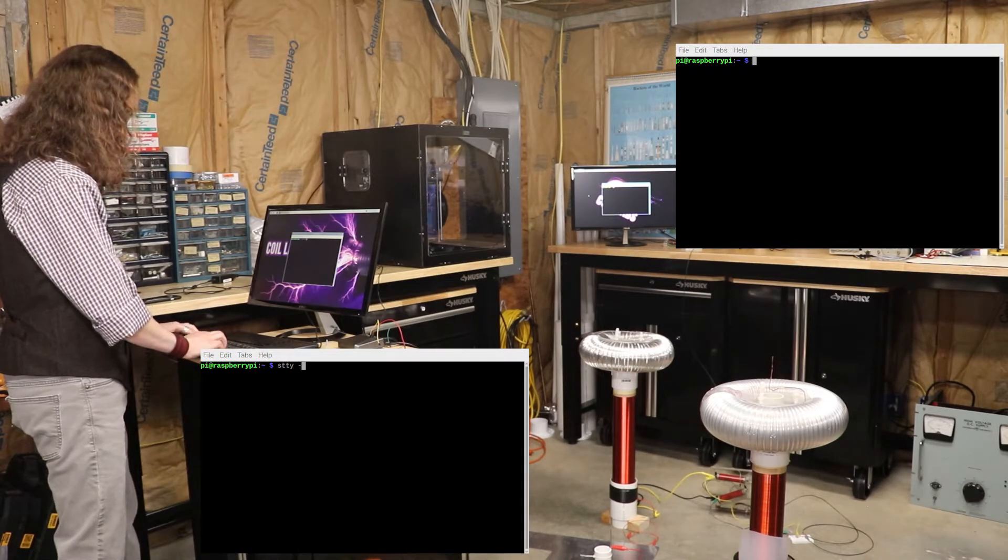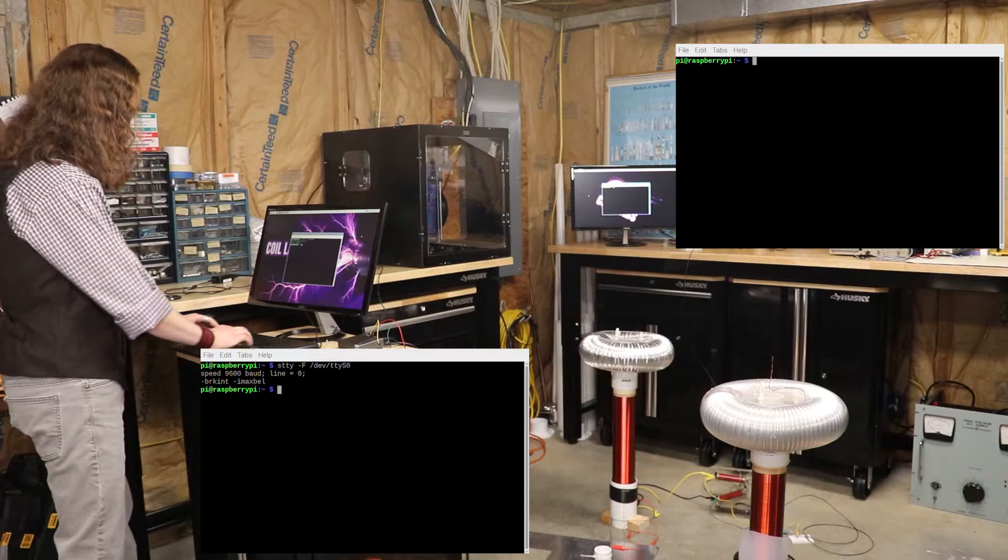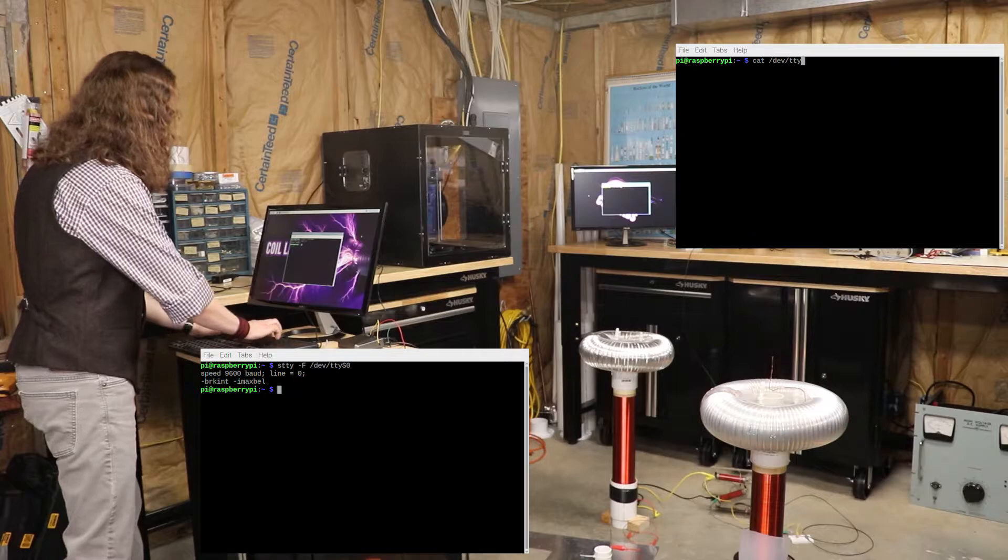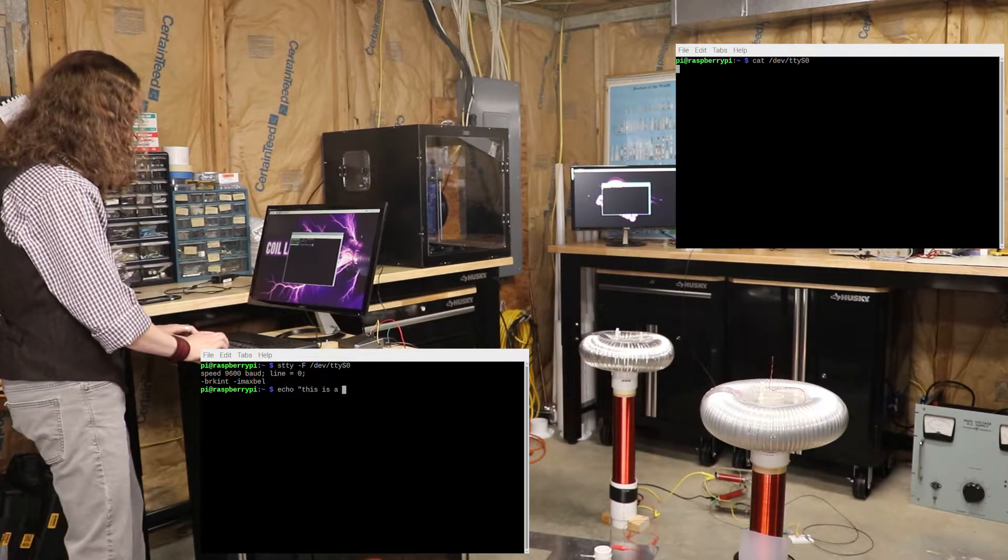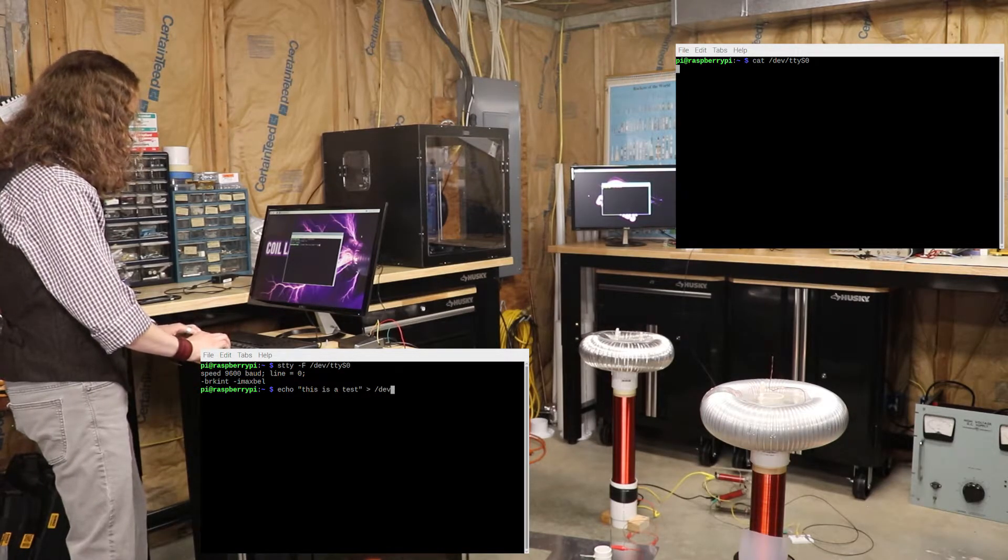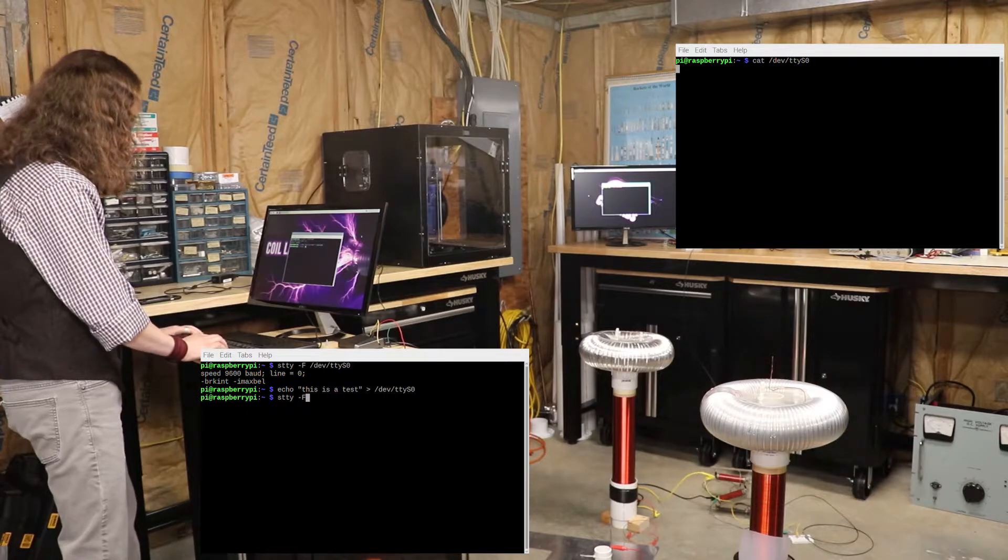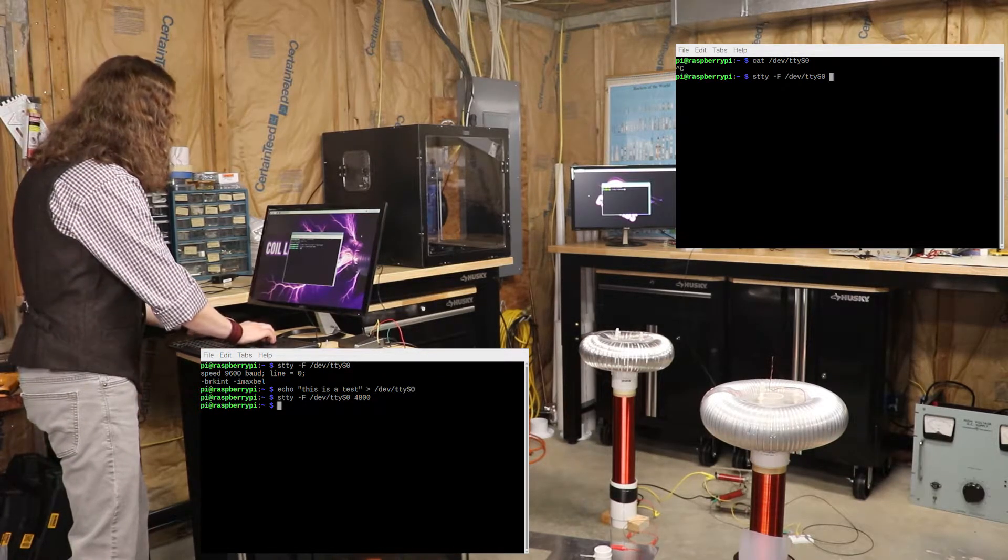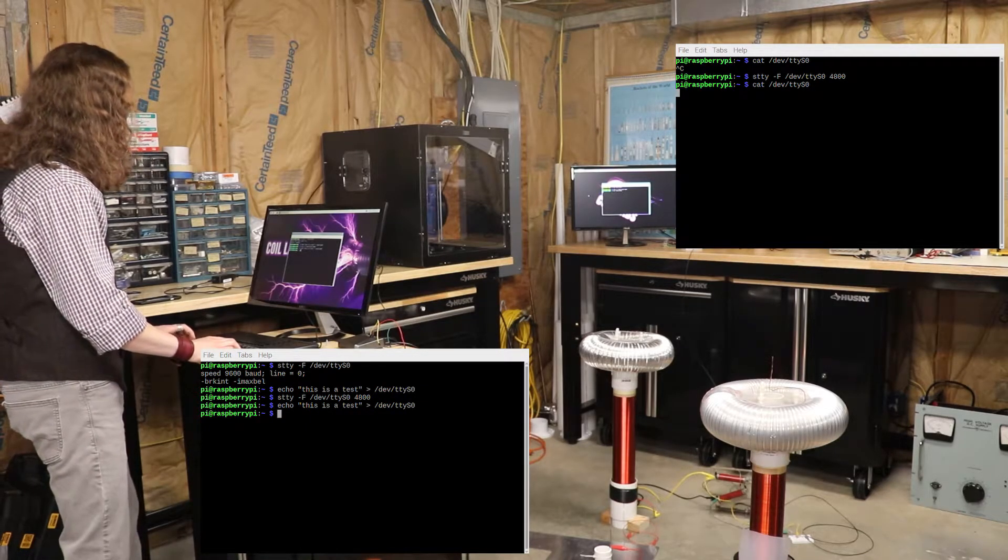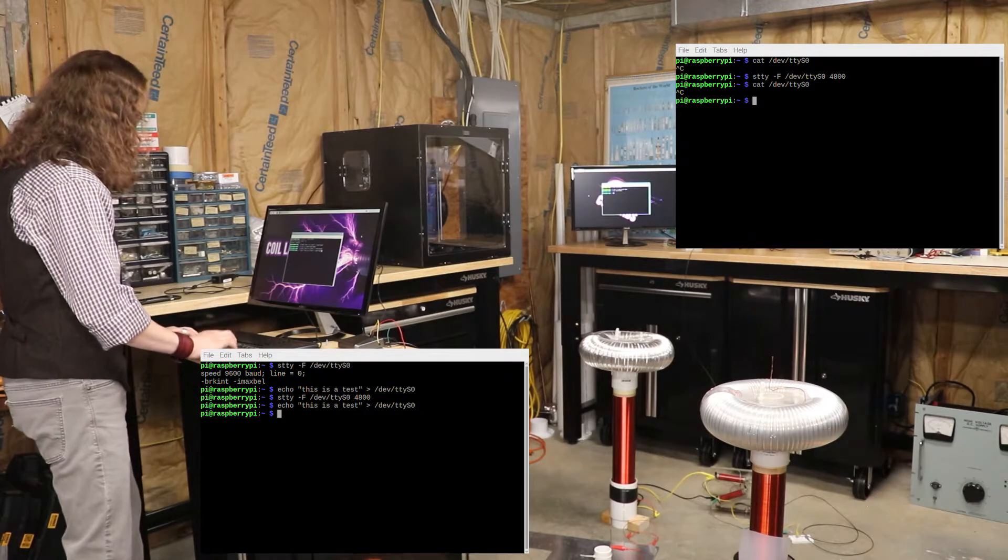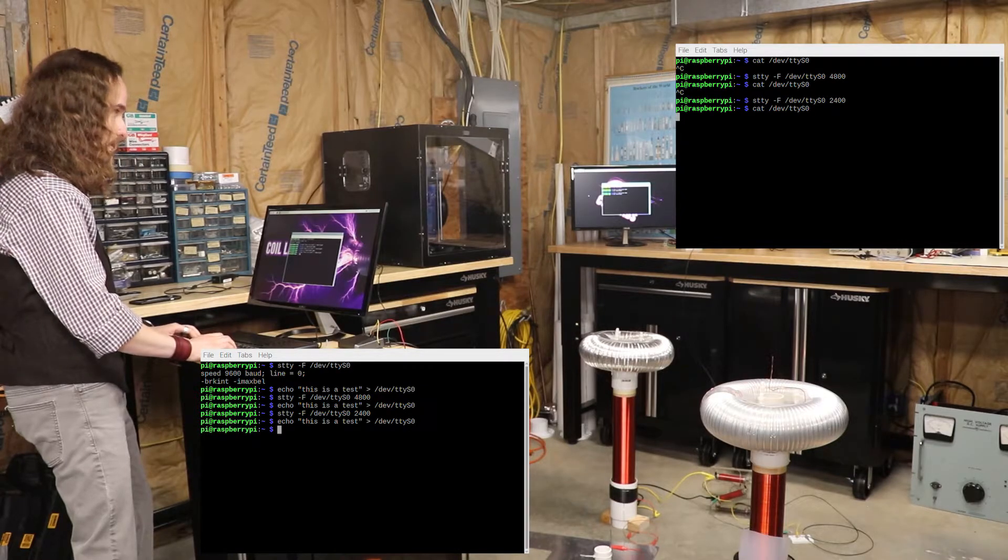Okay, what's your default baud rate? 9600. Okay, that's probably way too fast, but we'll see what happens. Nope. Okay, what about 4800? Nope. All right, what about 2400?